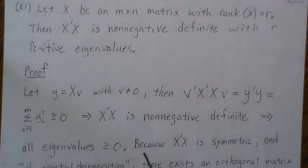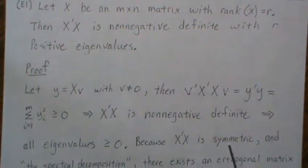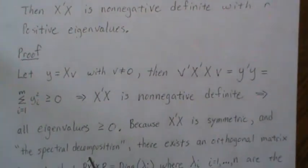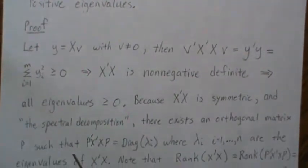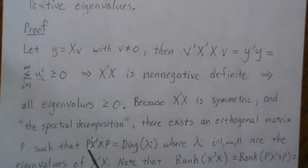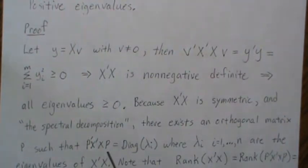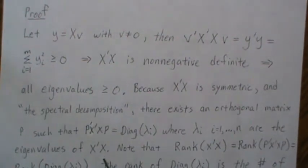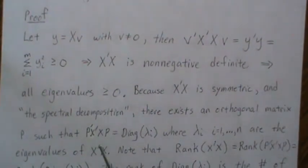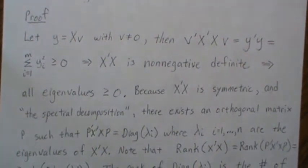Now, because X prime X is symmetric and the spectral decomposition theorem, which I have a video out called the spectral decomposition, there exists an orthogonal matrix P such that P prime X prime X P is equal to the diagonal matrix where the lambda I from I equal one to N are the eigenvalues of X prime X. So you'll have to go back and look at the spectral decomposition for that.